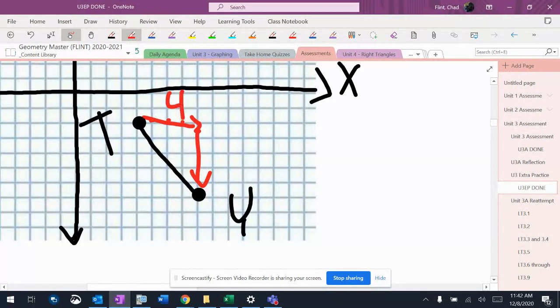Counting the rise and run: 1, 2, 3, 4, 1, 2, 3, 4, 5, and I'm going down, so it's negative. So the slope of that is negative 5 over 4.